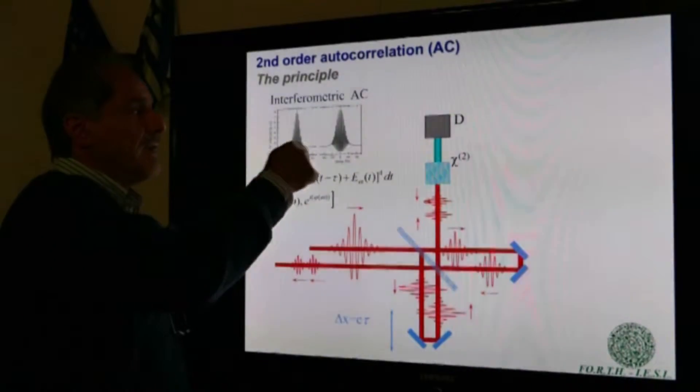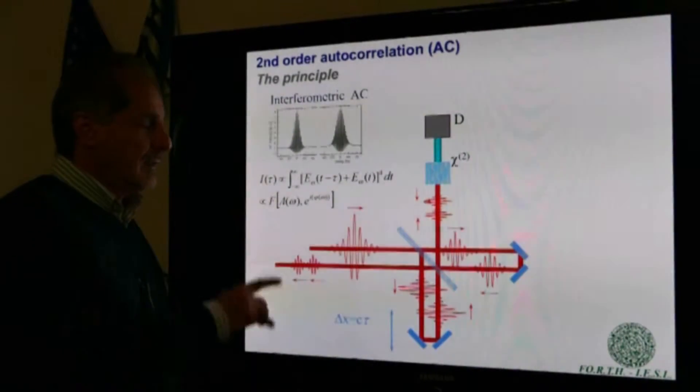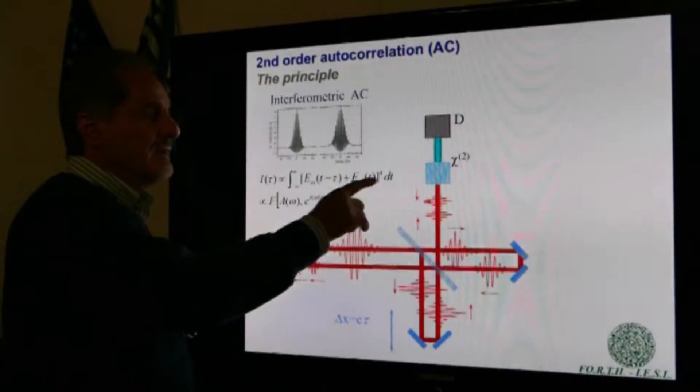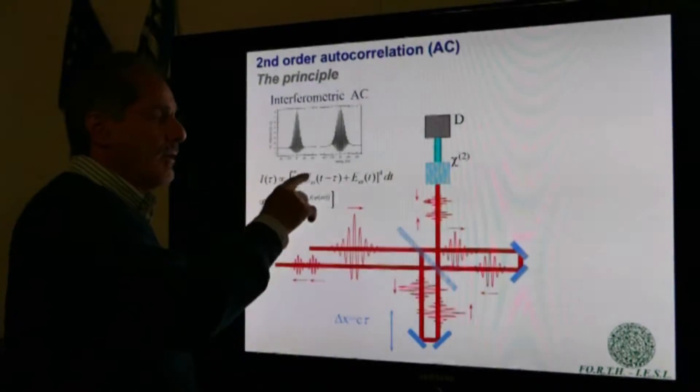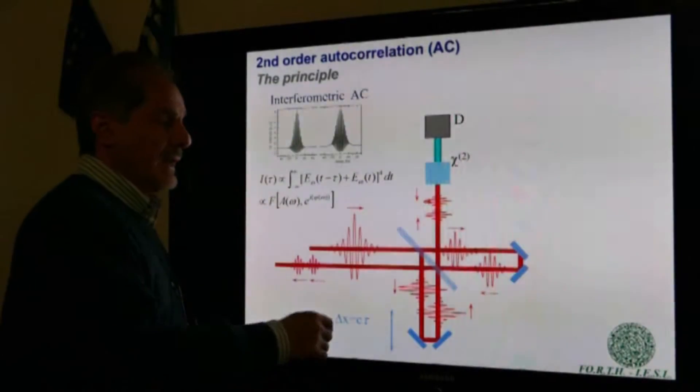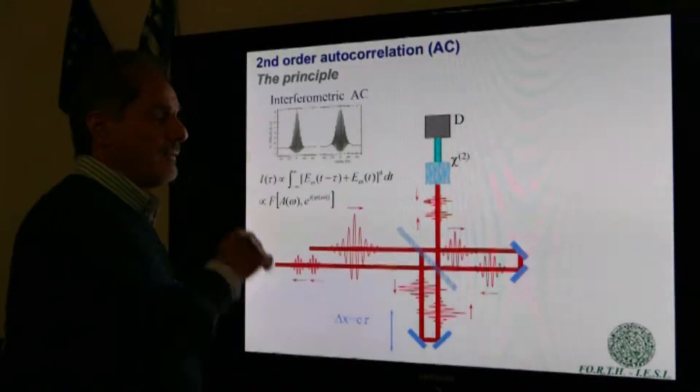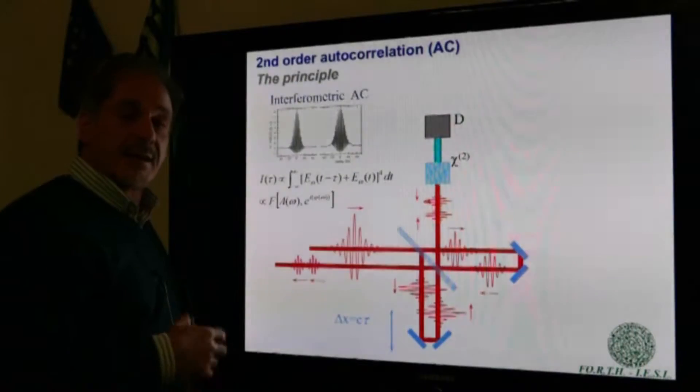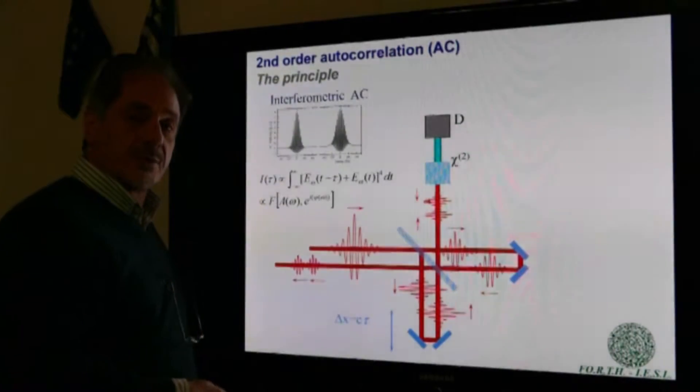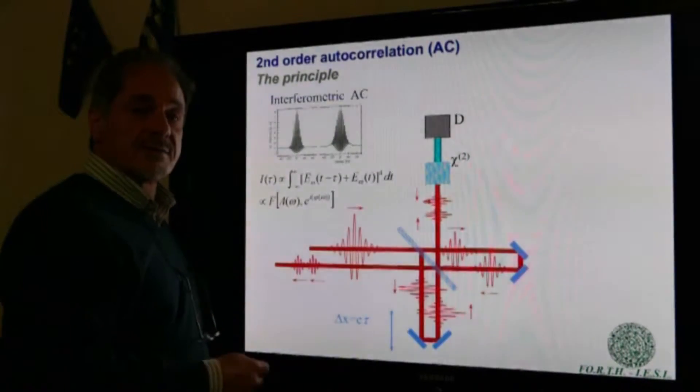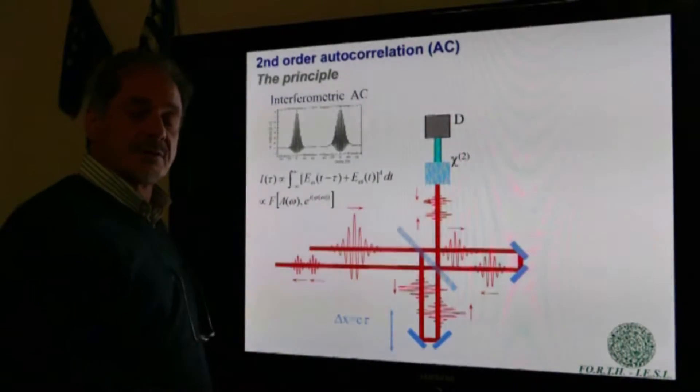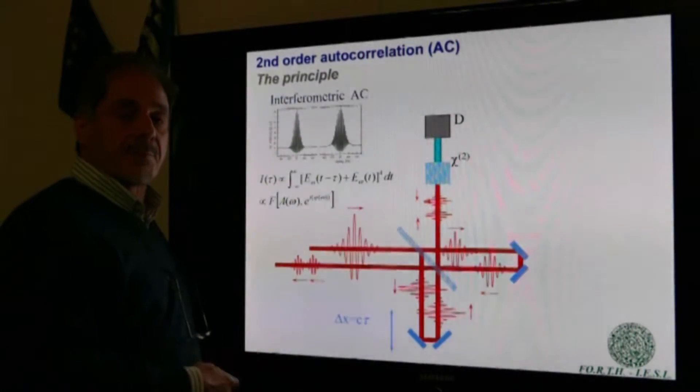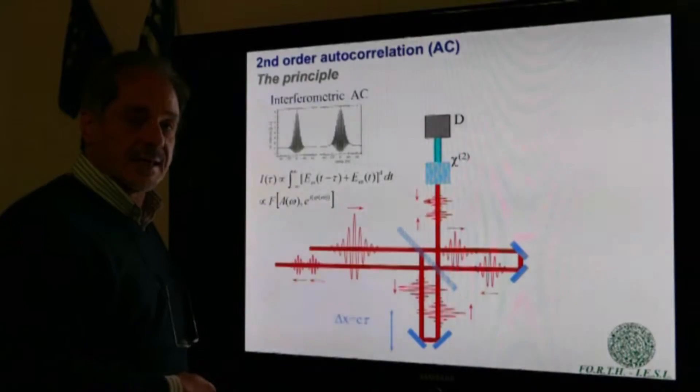Traces that are measured look like that. The measured signal is the integral in real time of the sum of the two electric fields of the two pulses to the fourth power. Fourth, because the intensity is proportional to the square of the E field and the second-order process yield is proportional to the square of the intensity.